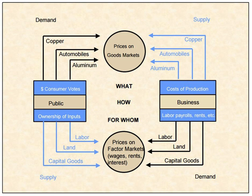Marxists assert that value derives from the volume of socially necessary labor time exerted in the creation of an object. This value does not relate to price in a simple manner, and the difficulty of the conversion of the mass of values into actual prices is known as the transformation problem. However, many recent Marxists deny that any problem exists. Marx was not concerned with proving that prices derive from values; in fact, he admonished other classical political economists like Ricardo and Smith for trying to make this proof.